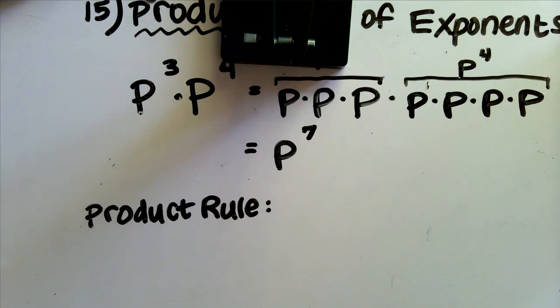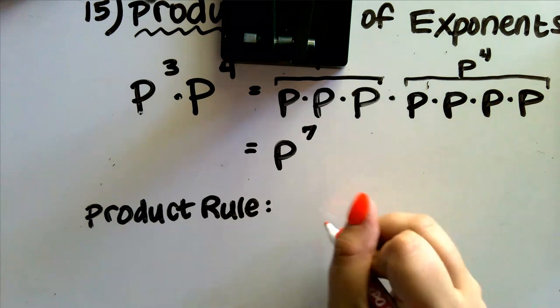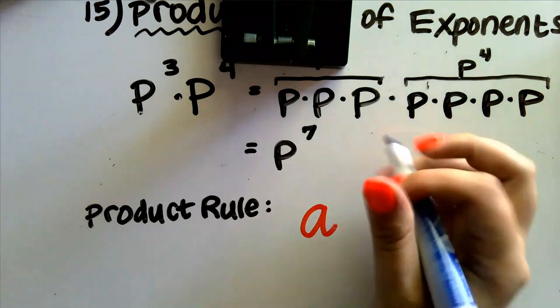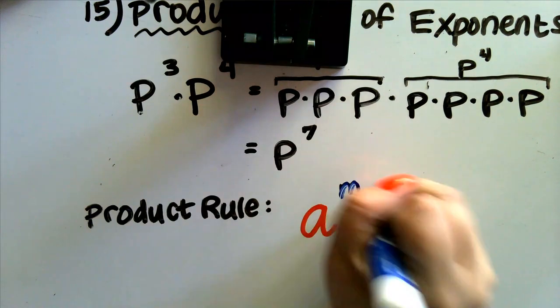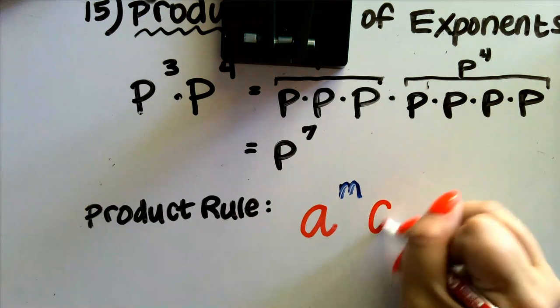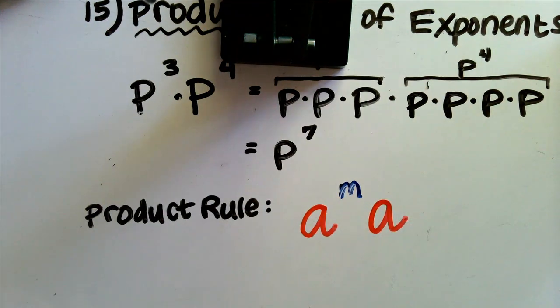The product rule. Go ahead and grab some colors. If we have a base value of a, I'm just using a generic variable, to the m power times a to the n power...